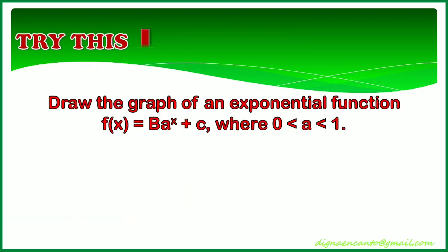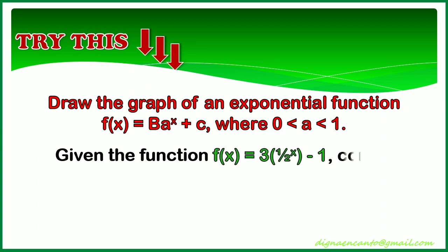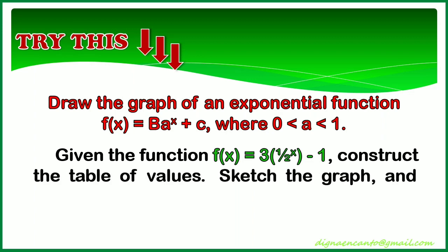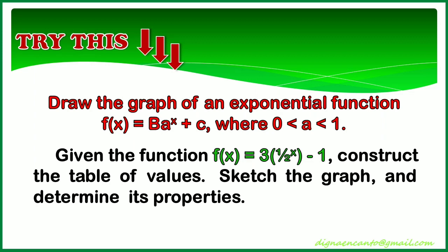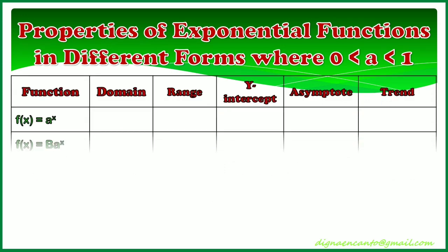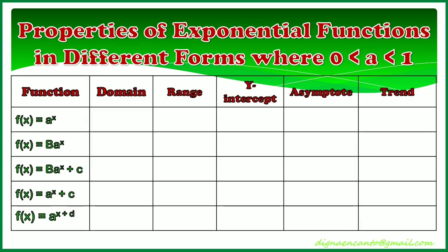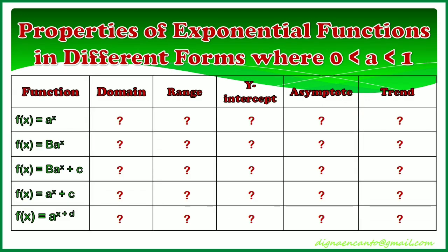And for your tasks. First, draw the graph of an exponential function f of x equals b times a to the x plus c, where a is greater than 0 but less than 1. Given the function f of x equals 3 times 1 half raised to the x minus 1, construct the table of values, sketch the graph, and determine its properties. Second, construct the table of properties of exponential functions in different forms where a is greater than 0 but less than 1.